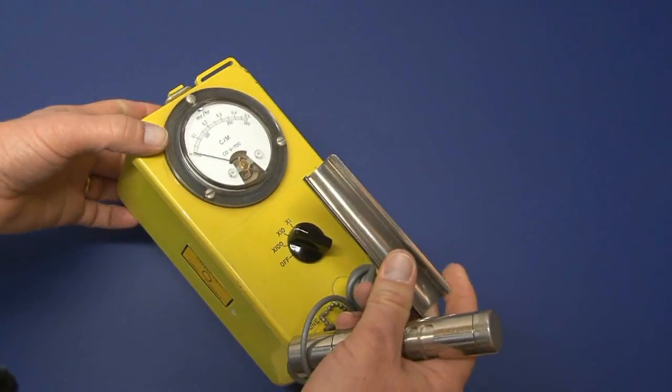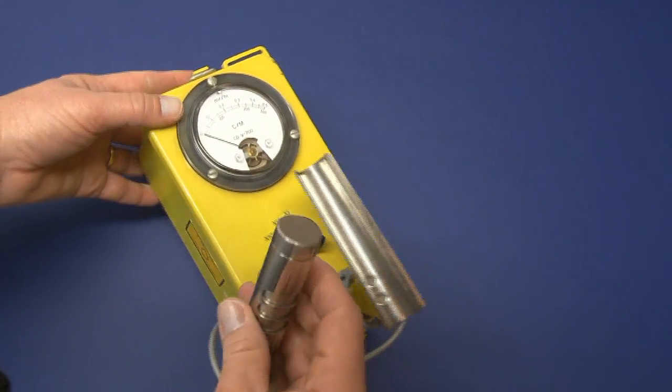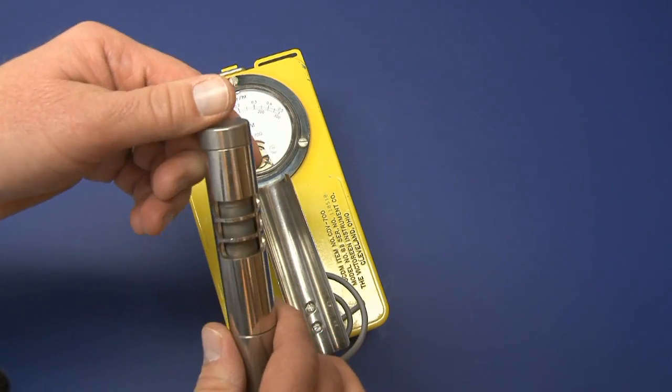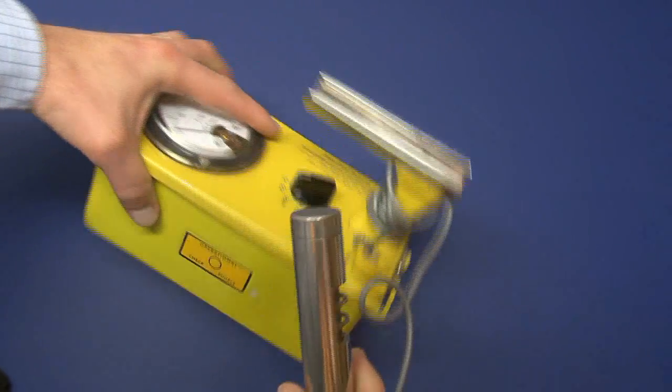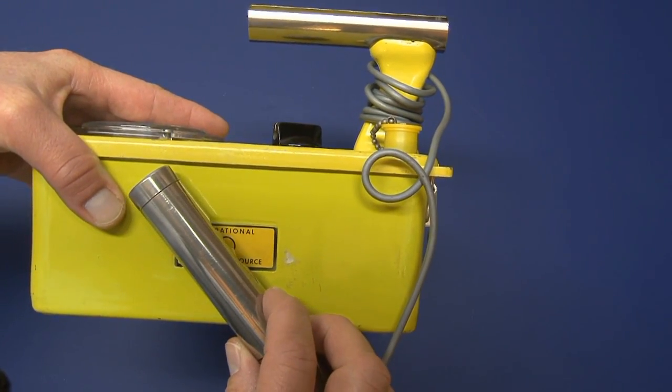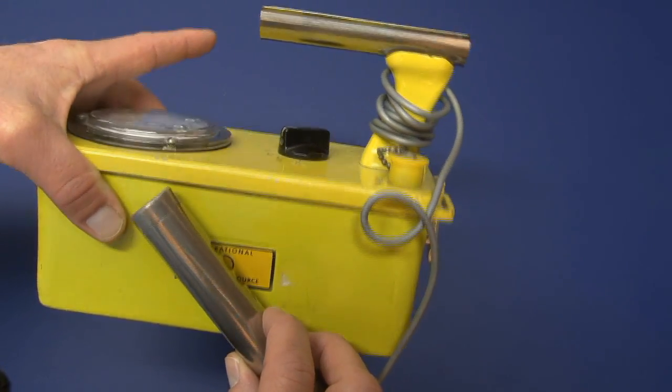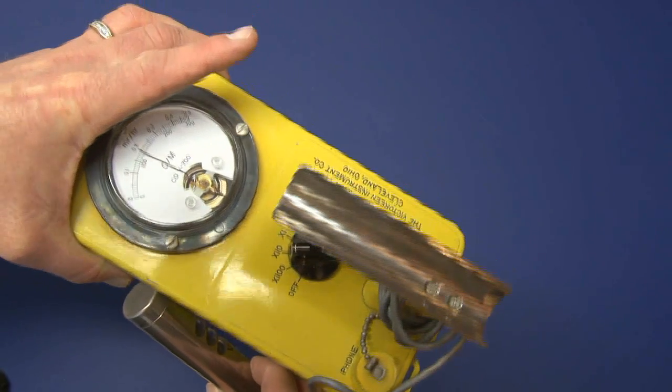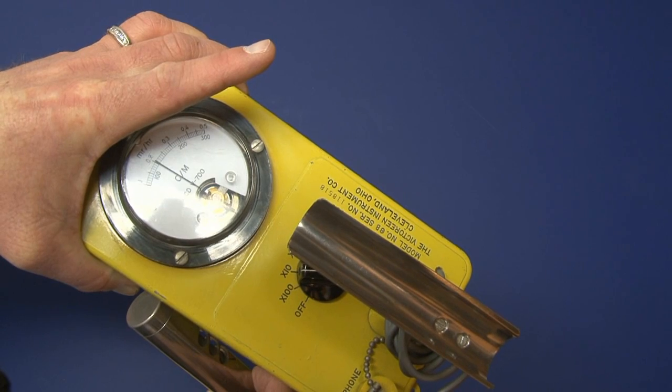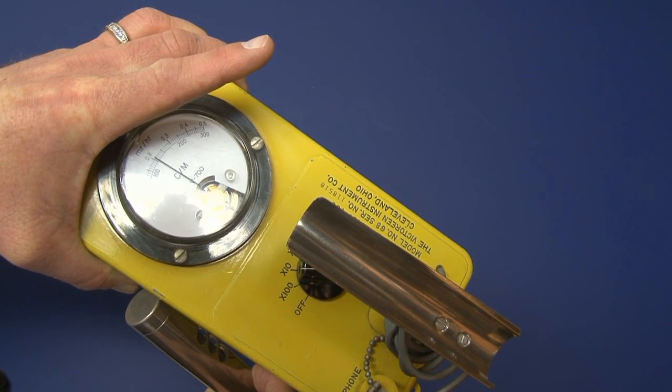What they say is that to source check this or operations check you should put it in the times 10 position with the rotating shield in the open position. Then you want to place this source check where you've got the circle, place the probe over that source check area, and you should get a reading somewhere at about 2 MR per hour, usually between 1.5 and 2 MR per hour.